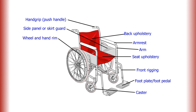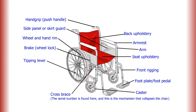Wheel and hand rim, brake or wheel lock, tipping lever, cross brace. The serial number is found here, and this is the mechanism that collapses the chair.